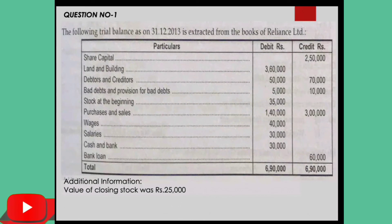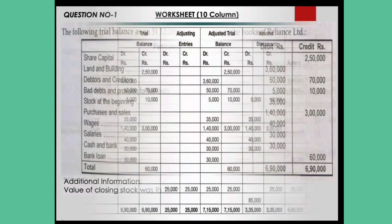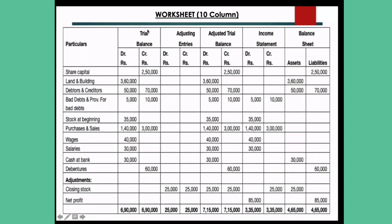The left and right detail sides are used. This is your 10-column worksheet. The question mentions whether it is 10 or 12 columns — but this one is a 10-column worksheet. Draw the format in your copy exactly: particulars, then trial balance divided into two parts — debit and credit. Then adjusting entries with debit and credit, adjusted trial balance with debit and credit, income statement with debit and credit, and balance sheet with debit and credit.